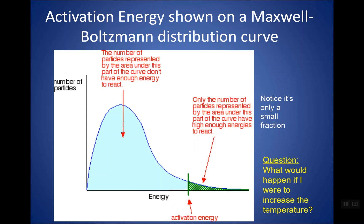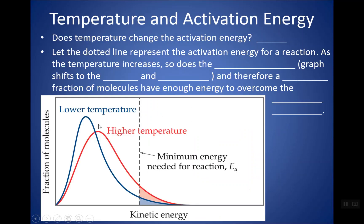The next question is: how does temperature change this graph? Changing the temperature will not change your activation energy, but it will change the average kinetic energy and average speed of your molecules. At a higher temperature, this curve moves to the right and starts to flatten out — the area under it stays the same because you have the same number of molecules. Notice that increasing temperature does not move the activation energy, but shifts the graph right so a larger fraction of collisions will be successful.